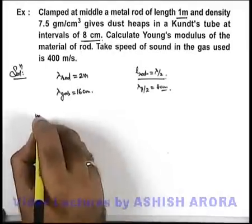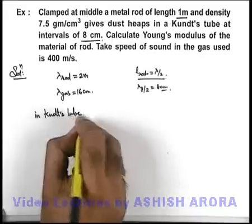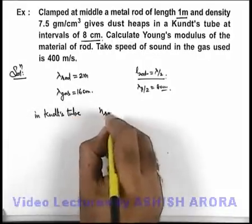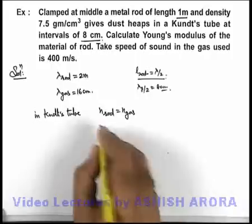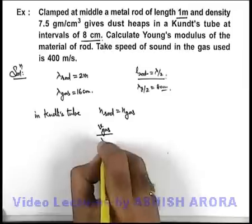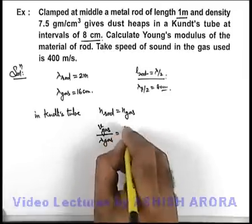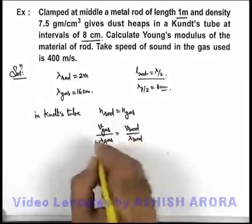And we know in Kundt's tube, frequency of oscillation in rod is equal to frequency of oscillation in gas. So we can write speed in gas by wavelength in gas is equal to speed in rod by wavelength in rod. This will give us velocity of sound in rod.